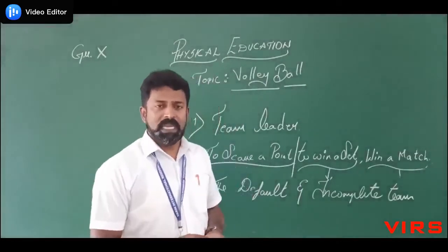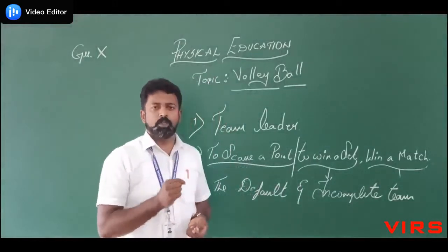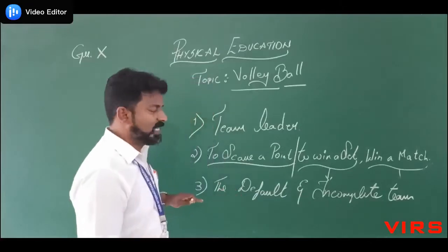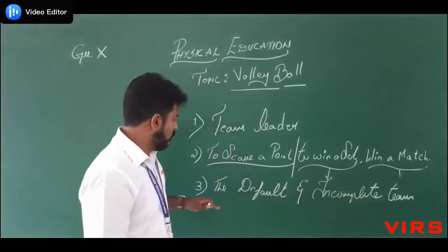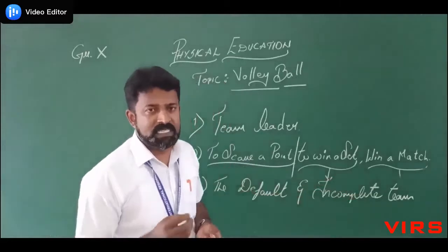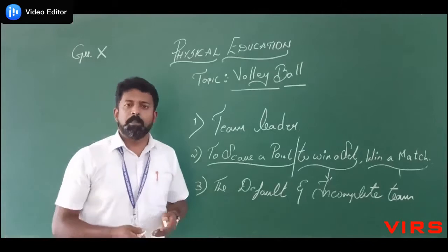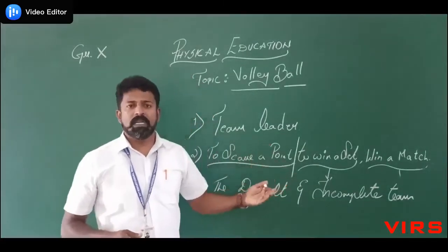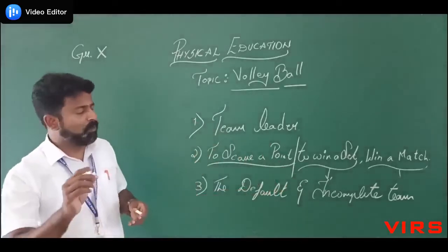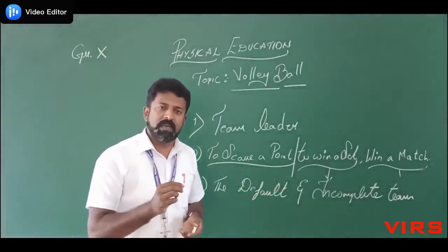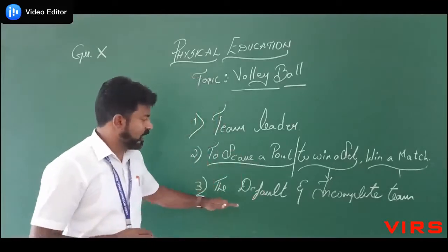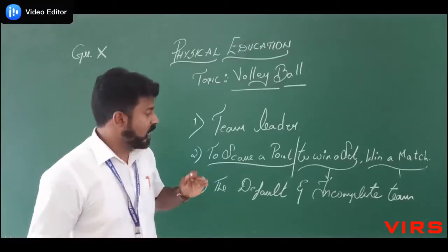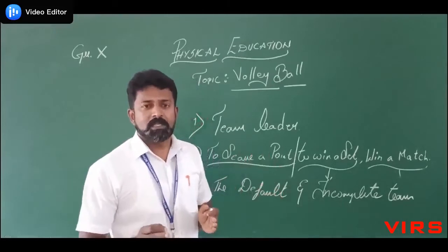The next rule is the default and incomplete team. In volleyball, six players are needed on the court to play. If there are not six players at the start, we consider it an incomplete team. When it comes to default — if a team cannot justify why they did not come to the venue on time, they are considered a default team and the opponent is declared the winner.